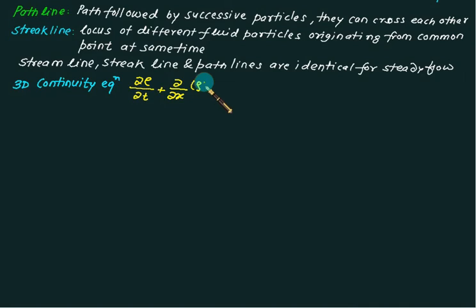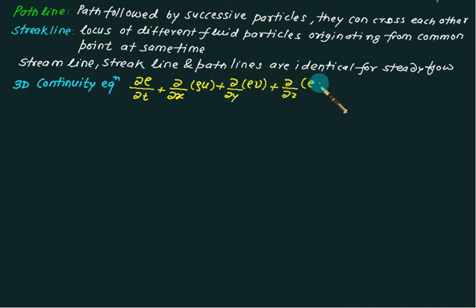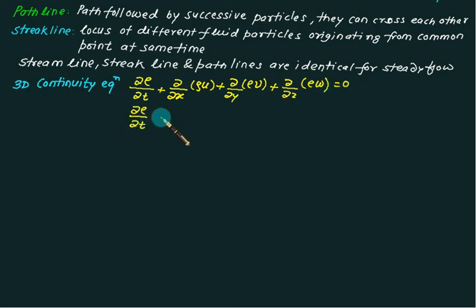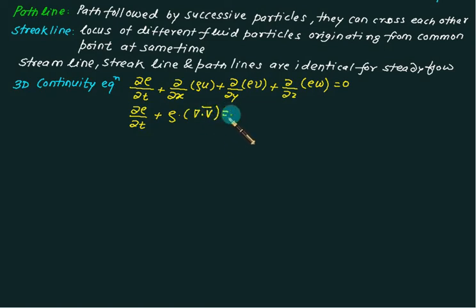The three-dimensional continuity equation is given as: ∂ρ/∂t + ∂(ρu)/∂x + ∂(ρv)/∂y + ∂(ρw)/∂z = 0. In vector form, this can be written as ∂ρ/∂t + ρ(∇ · V̄) = 0, where ρ may be a function of both time and space.